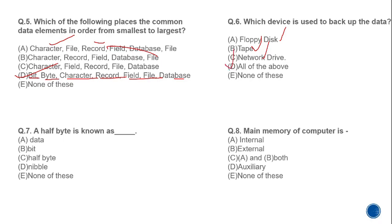MCQ 7: A half byte is known as what? As discussed, there is a unit between bit and byte called a nibble, which is 4 bits — half of a byte. The correct answer is D: nibble.